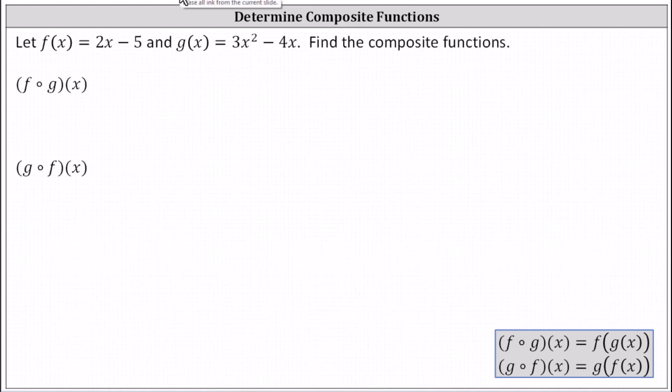Let f of x equal 2x minus 5 and g of x equal 3x squared minus 4x. Find the composite functions.